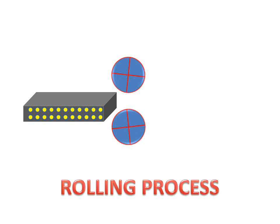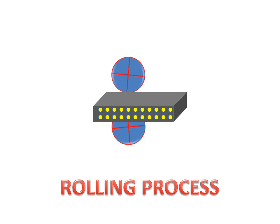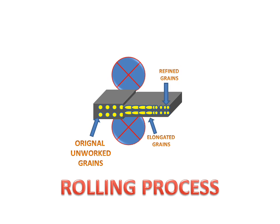Now the rollers start rotating and the plate travels between them. These original unworked grains are changed into elongated grains and refined grains. The thickness of the metal plate or ingot decreases through the rolling process. So rolling process decreases the thickness of the ingot and refines the grains of the plate or ingot. This is the working of the rolling process.